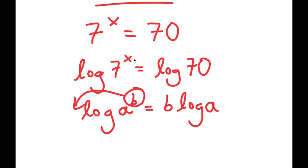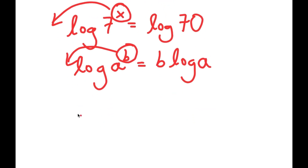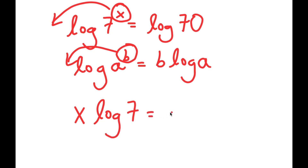Log a to the power of b is equal to b times log a. This property is so useful because before, x was an exponent and it's really hard to solve for x in that state. But now I can move x to the front and it's going to be an actual term. So now I get x times log 7 is equal to log 70.